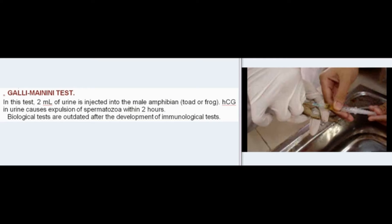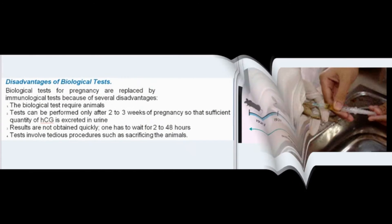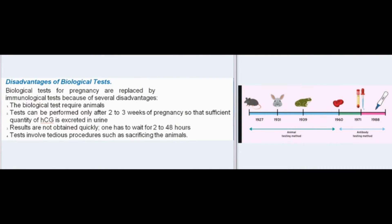Biological tests are now outdated after the development of immunological tests. Their disadvantages include: they require animals; tests can be performed only after two to three weeks of pregnancy so that sufficient HCG is excreted in urine; results are not obtained quickly — one has to wait two to forty-eight hours; and the tests involve tedious procedures such as sacrificing animals.